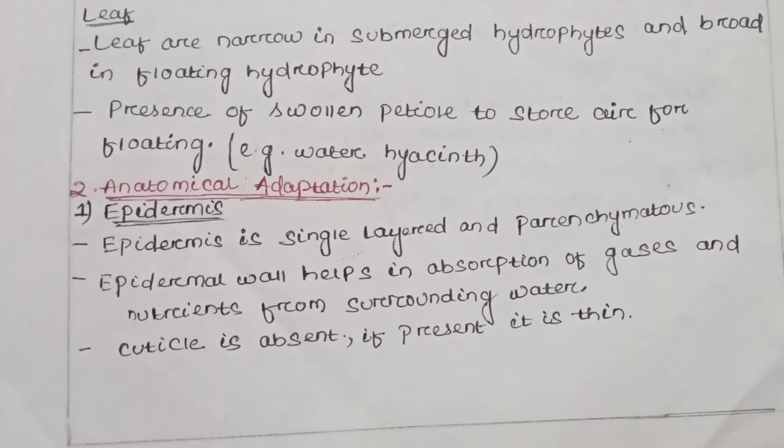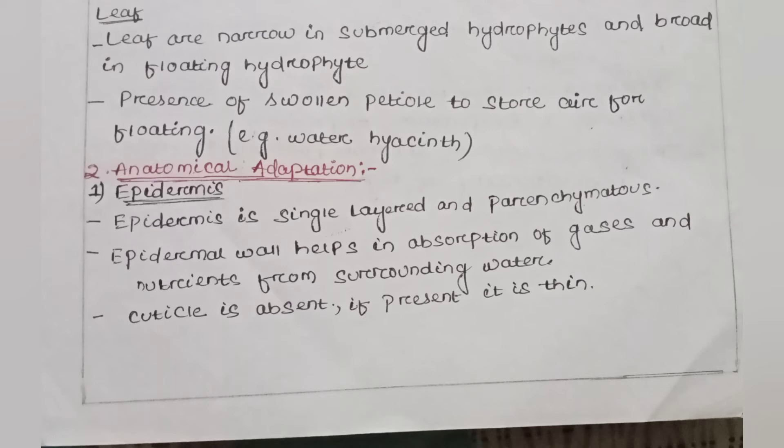Next is anatomical adaptation — anatomy means internal structure. First is the epidermis: 'epi' means above and 'dermis' means layer. The epidermis is a single layer and parenchymatous tissues are present. The epidermal wall helps in absorption of gases and nutrients from the surrounding water through the outermost layer.